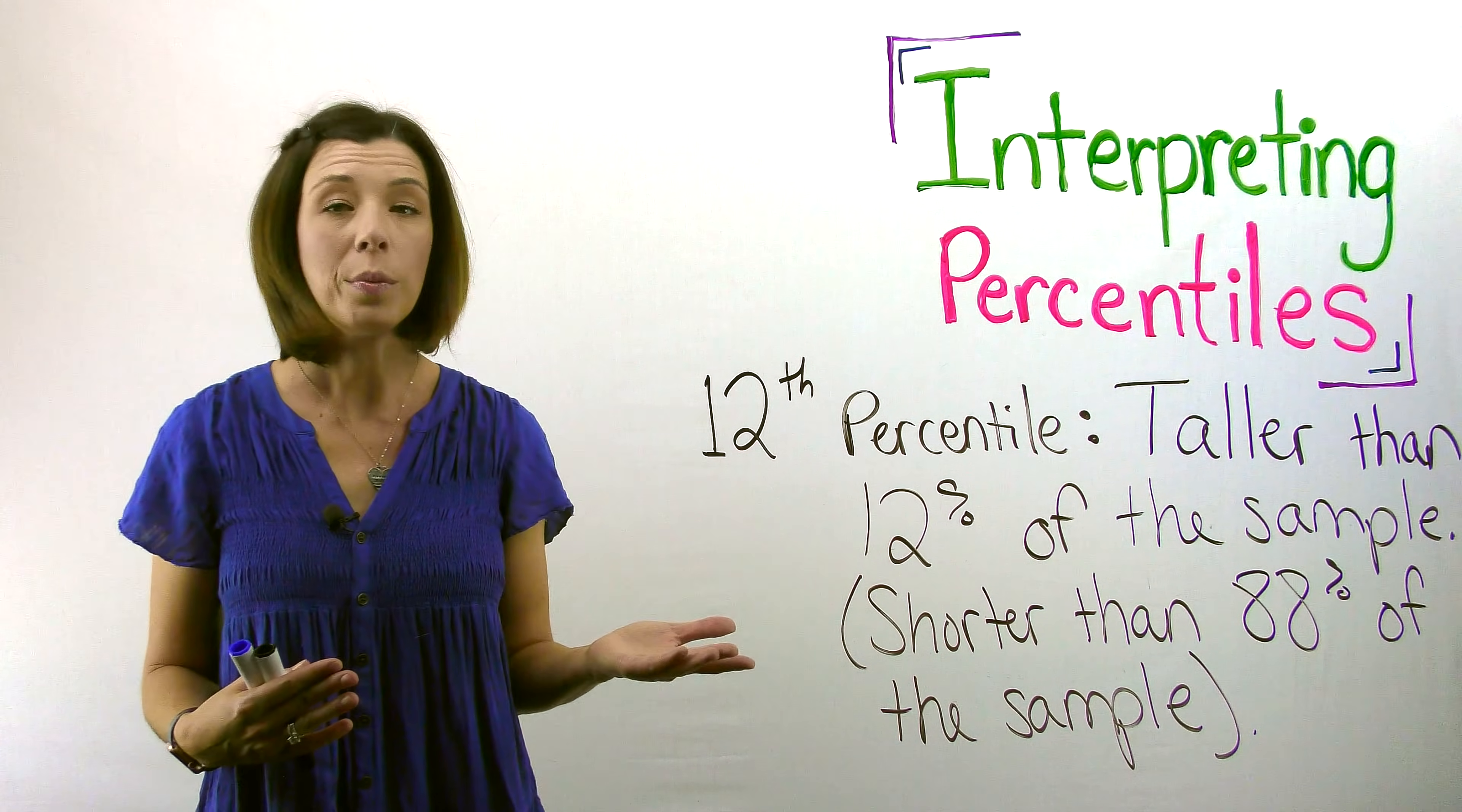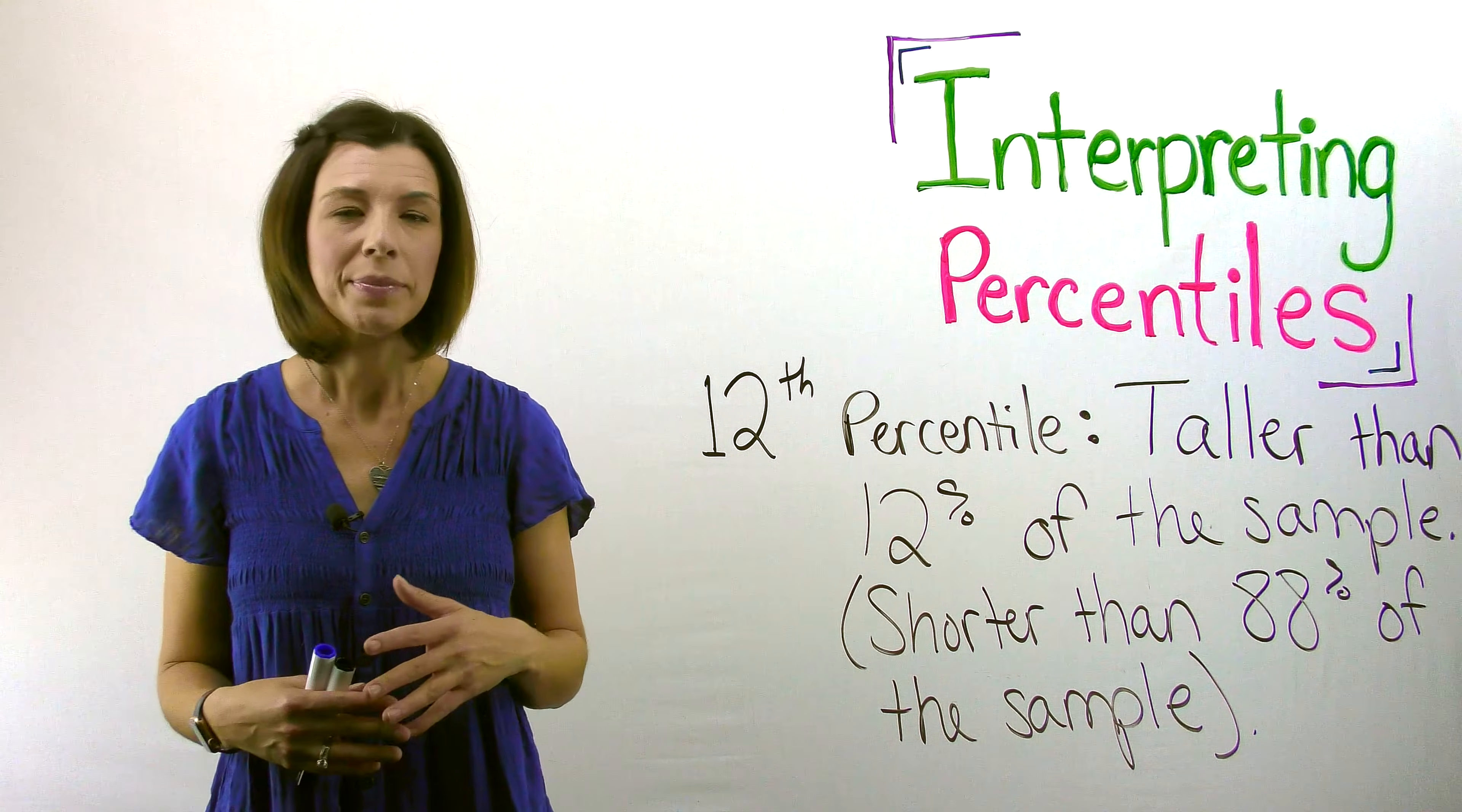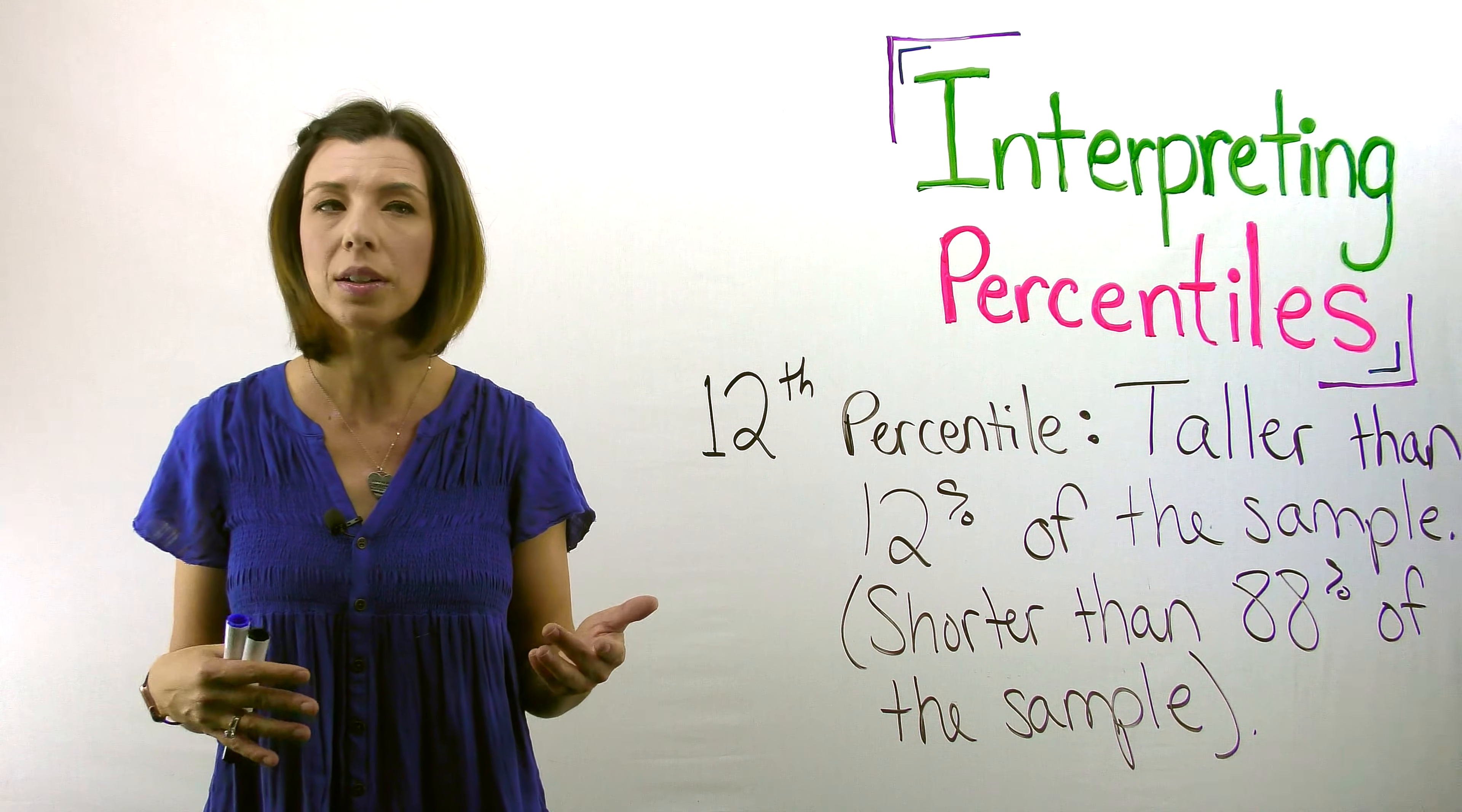One thing we need to consider when we're looking at percentiles is what is our sample. For instance, let's take our example of the baby that's taller. If we're comparing this baby to the daycare group, and let's say the daycare has six-week-old babies up until three-year-olds.